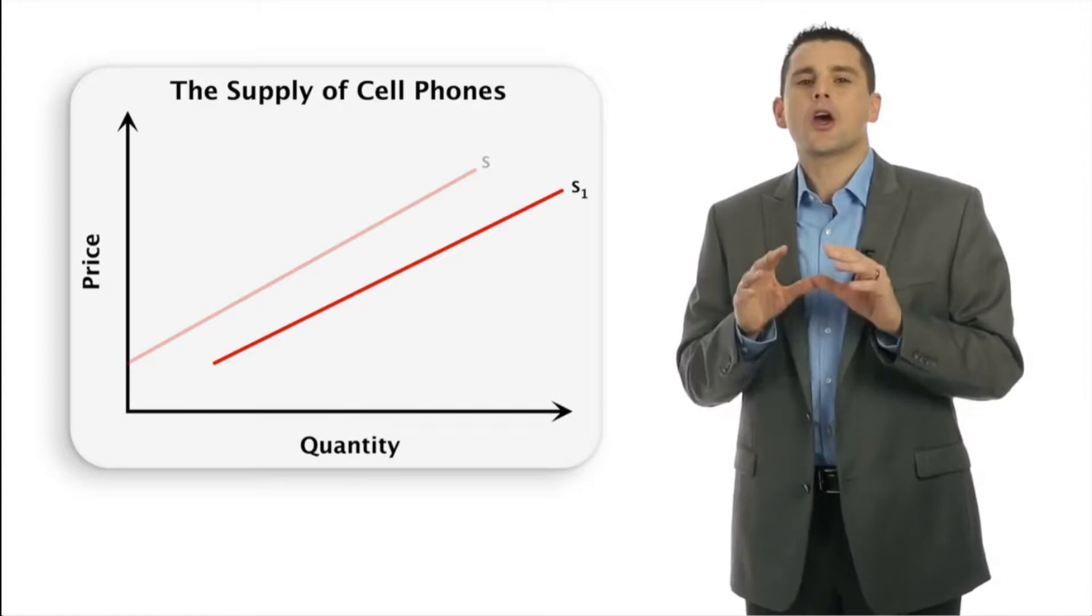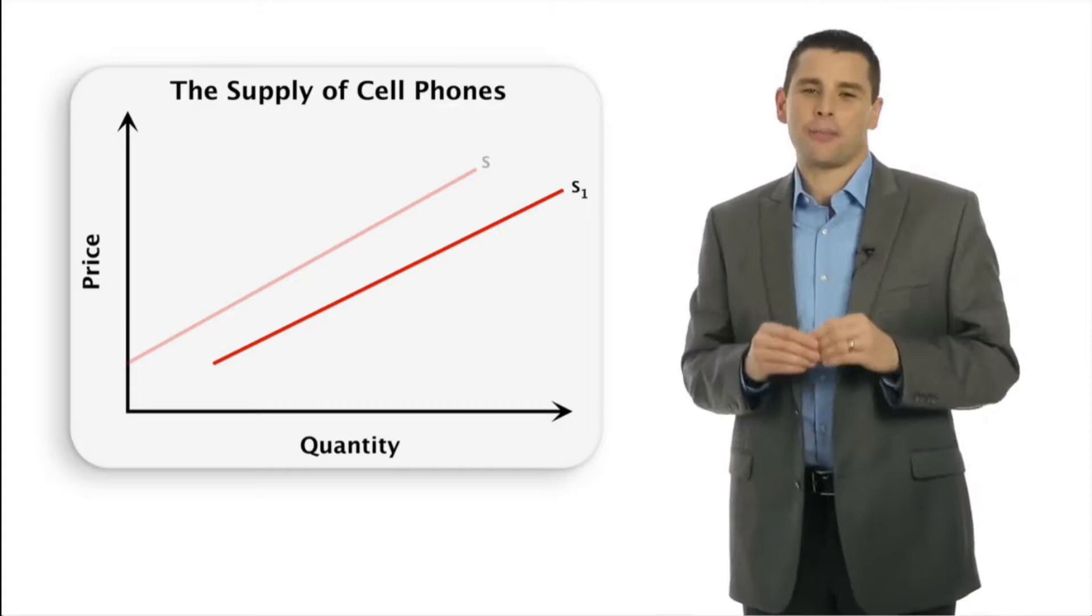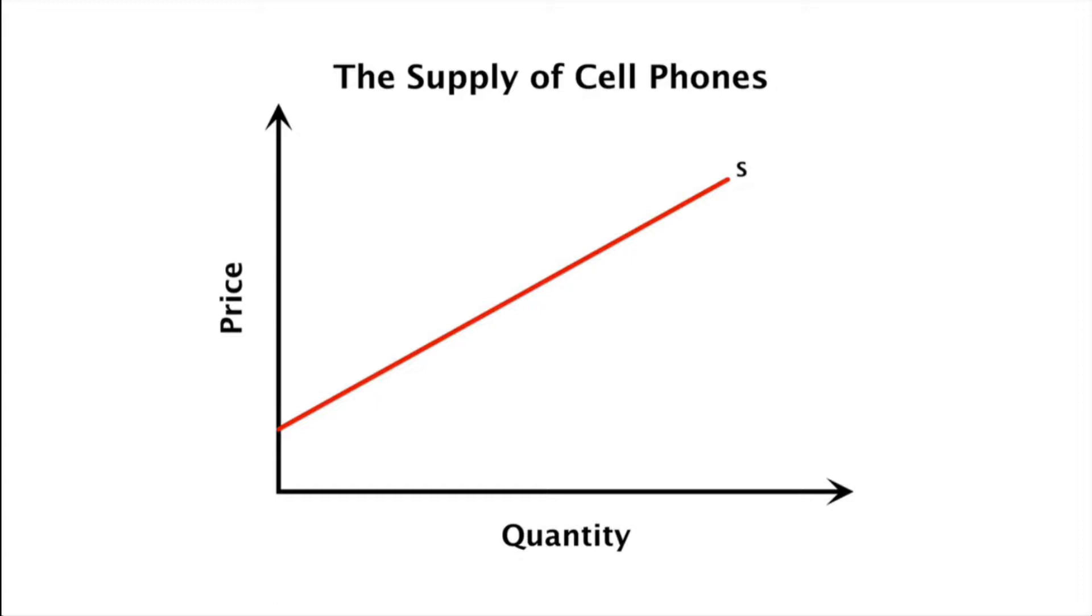Suppose instead that intense competition among carriers causes one firm to leave the market. This situation will have exactly the opposite effect. Starting with the original supply curve, the carrier's exit reduces the quantity of cell phones available at any given price.